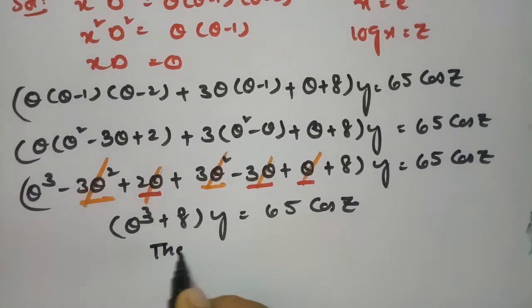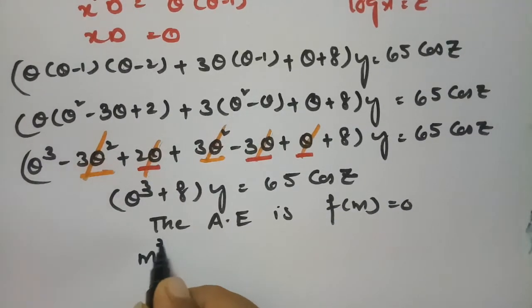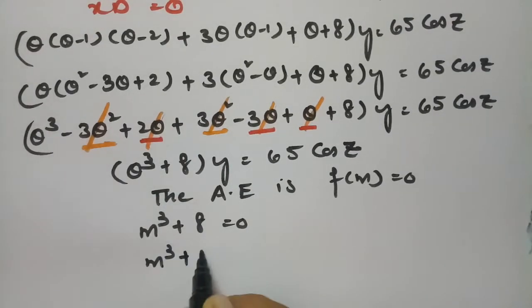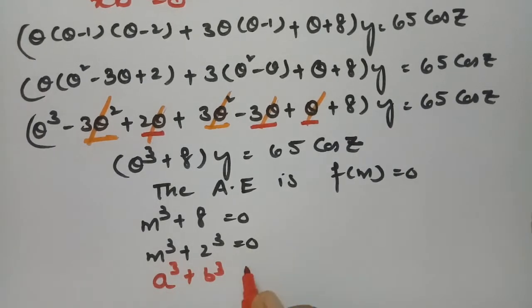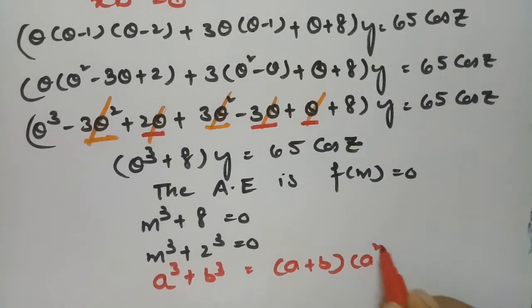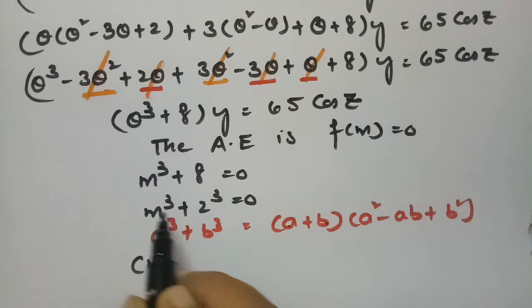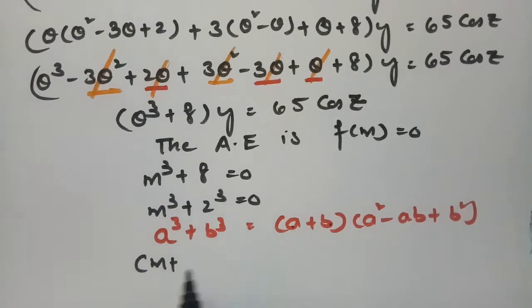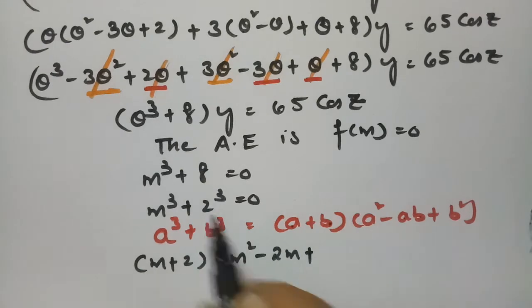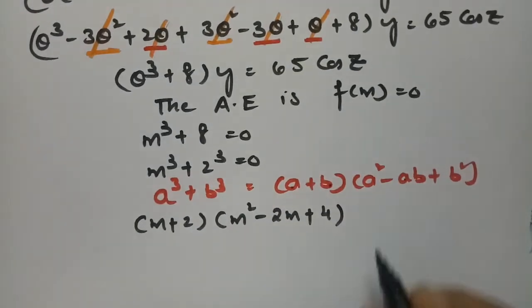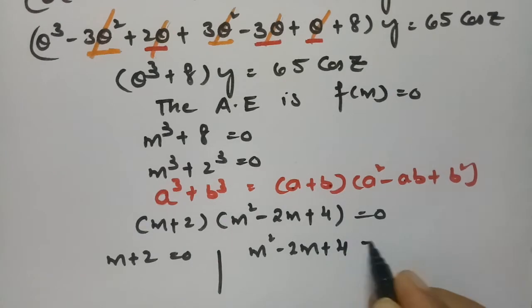For the complementary factor, the auxiliary equation is f(m) = 0, which is m³ + 8 = 0, or m³ + 2³ = 0. This is of the form a³ + b³ = (a+b)(a² - ab + b²). Substituting: (m+2)(m² - 2m + 4) = 0, giving m + 2 = 0 and m² - 2m + 4 = 0.